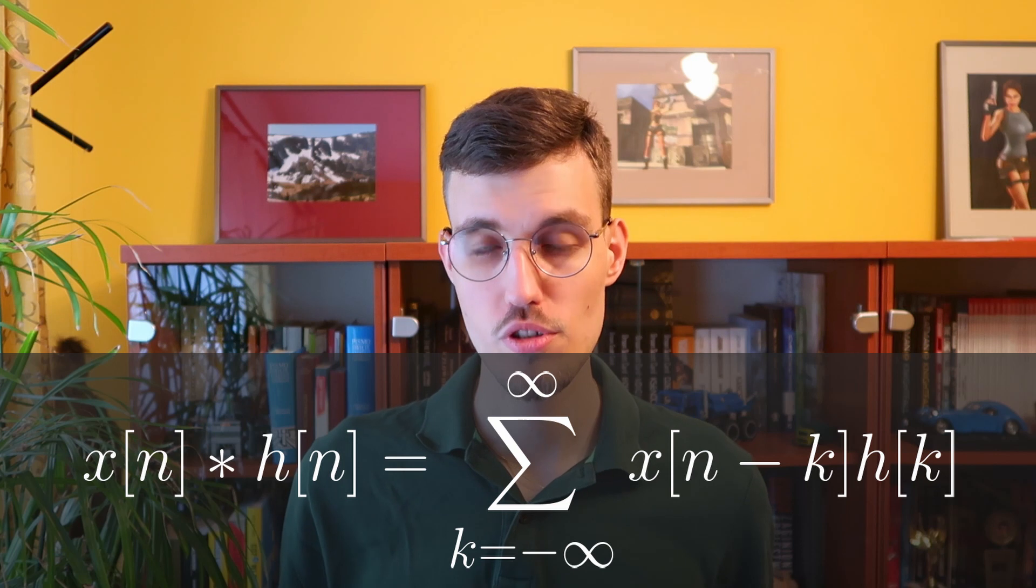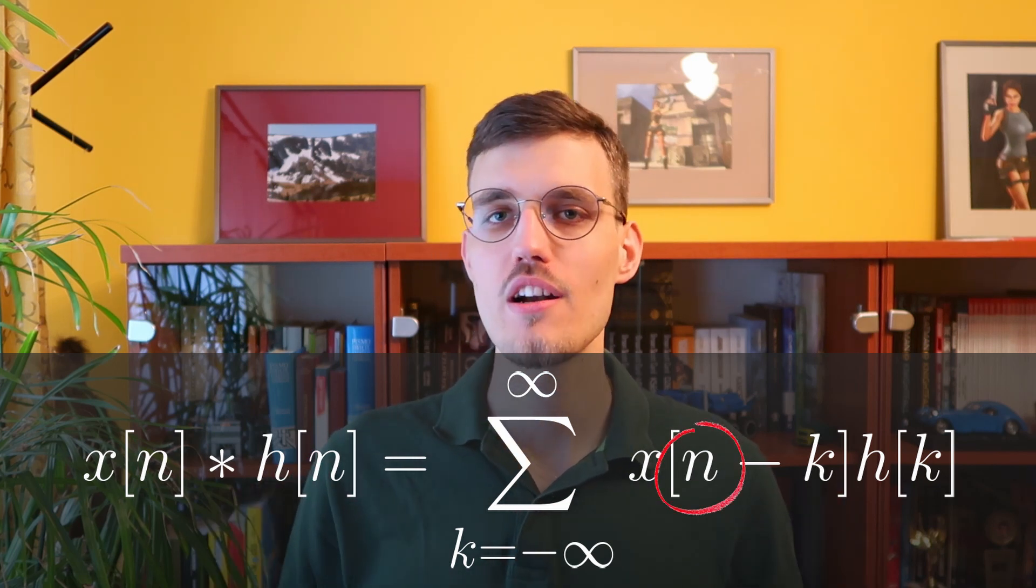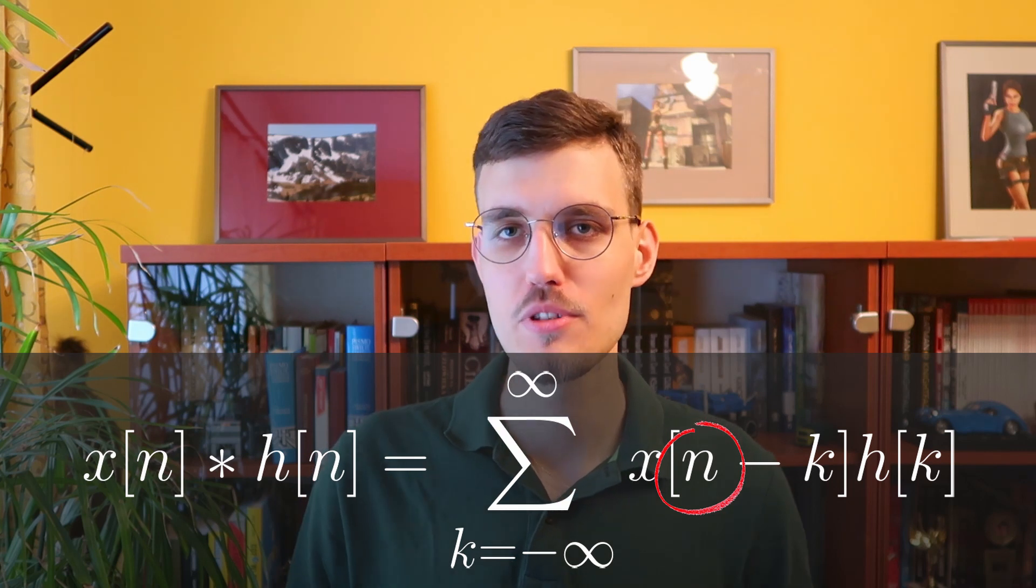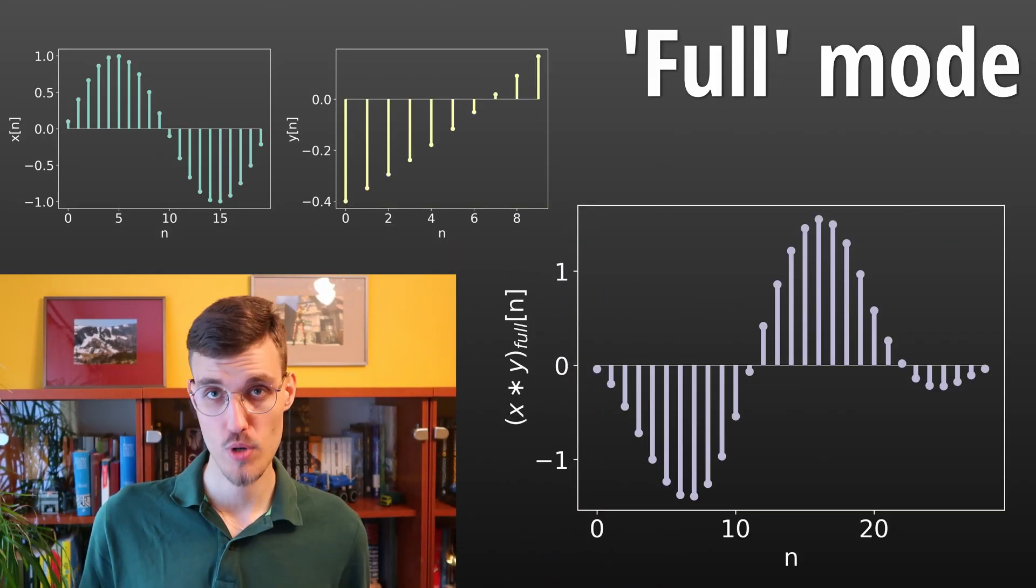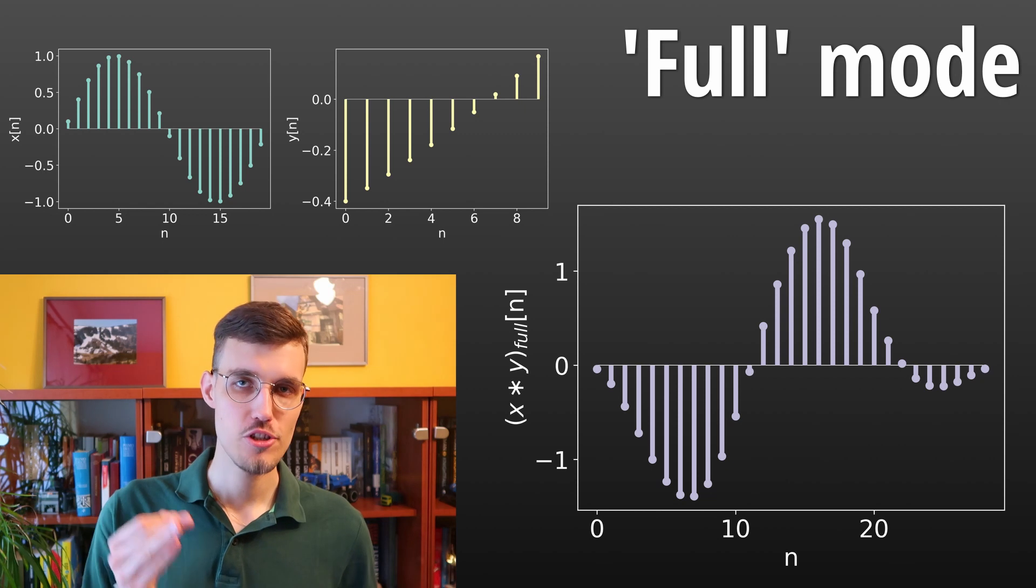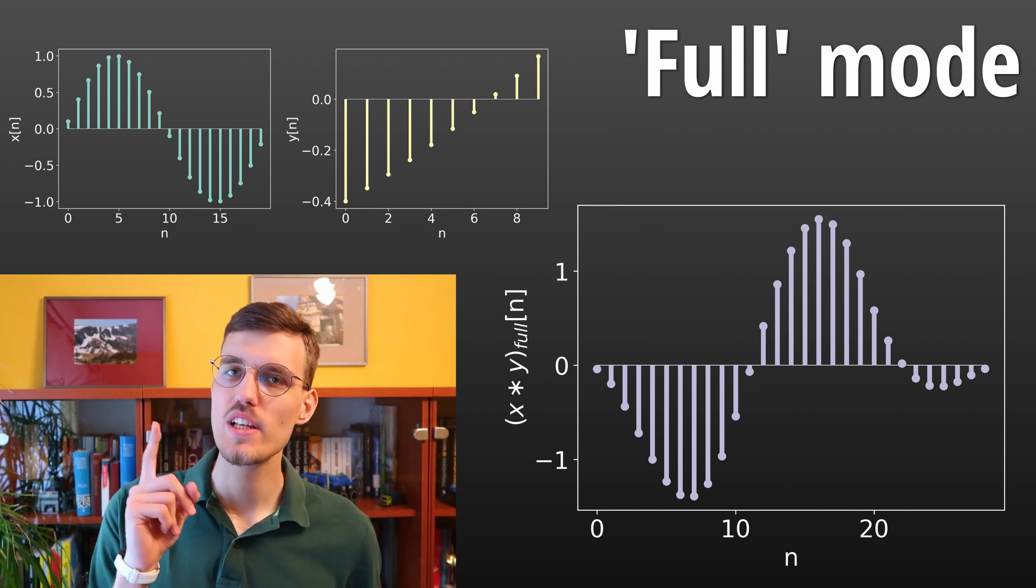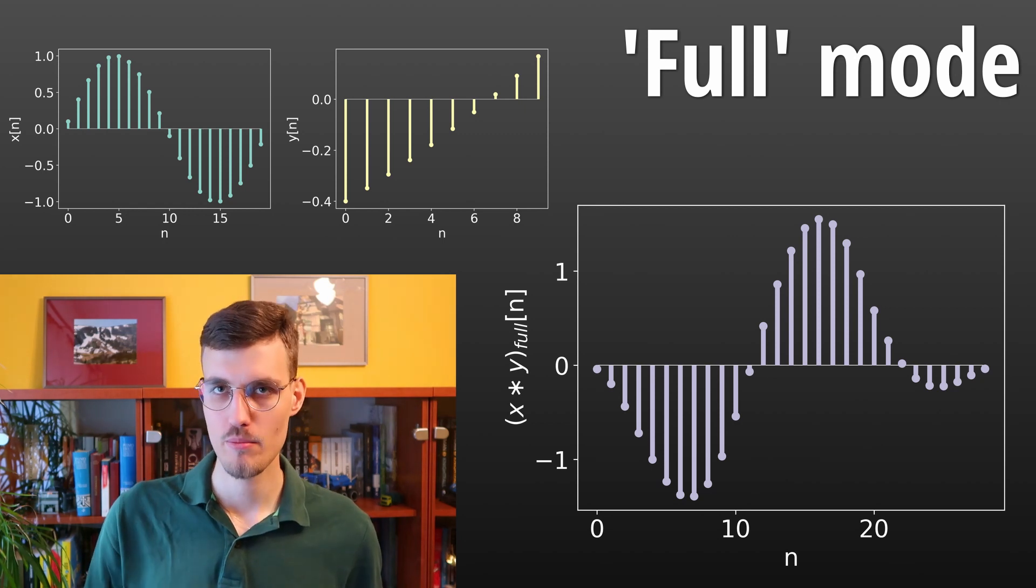The three modes of convolution relate exactly to the shifts that we are allowed to take to compute a specific mode of convolution. The first mode to discuss is the full mode. In this mode, we take every shift between the two signals for which there exists at least one overlapping sample.